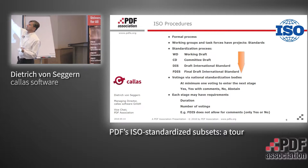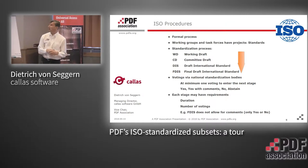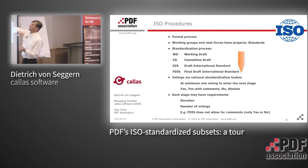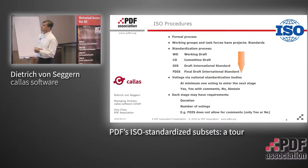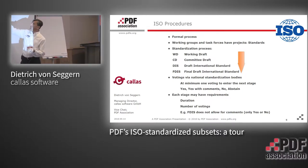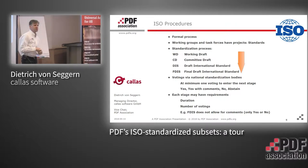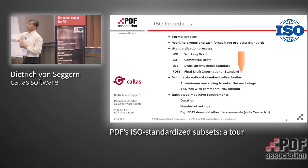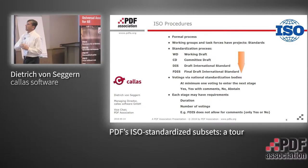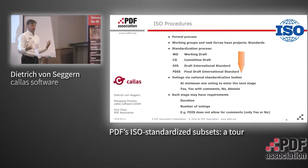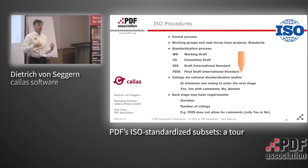Any document created undergoes stages: a working draft, then a committee draft, then a draft international standard, which should already be pretty final. Then the final stage is the FDIS — the final draft international standard. To get from one stage to the next, you have votings. All national standardization bodies — here in Germany it's DIN, and most nations have standardization bodies that are members at ISO. Germany's DIN or America's ANSI — each country has just one vote to say they agree to the standard, agree with comments, don't agree, or abstain.